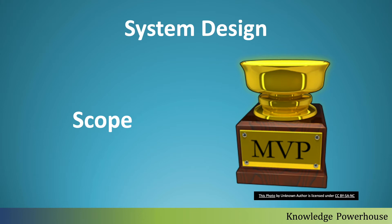Now let's go to the items you should try to cover during a system design interview. The first part is scope — the amount of work and what exactly the system is supposed to do. Someone may ask you to develop a lift system, Twitter, Uber, or something similar. These are systems built by thousands of engineers over multiple years, so you need to define the scope for the session — whether it's 30, 45, or 60 minutes. It's a good idea to start with a reduced scope or minimum viable product.